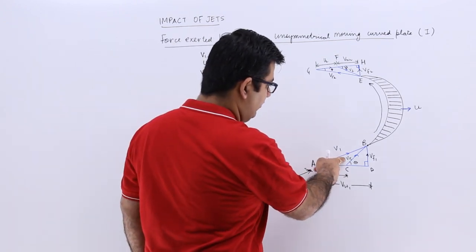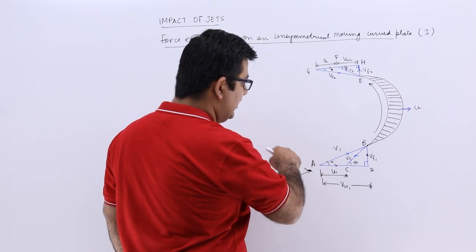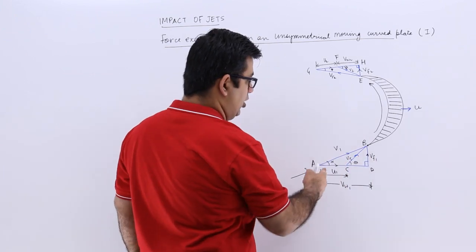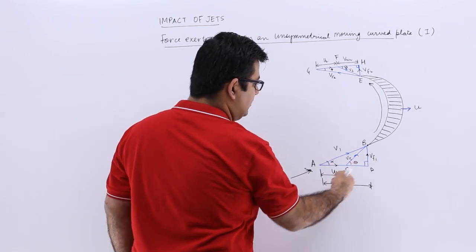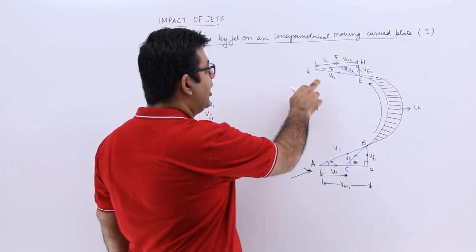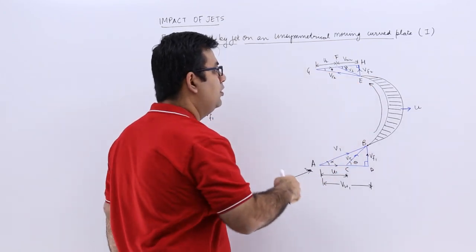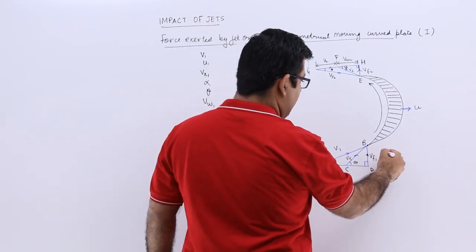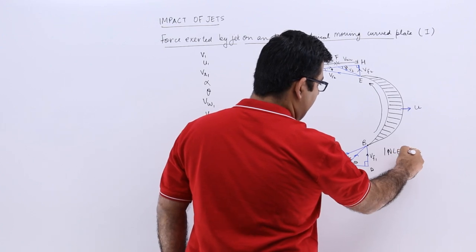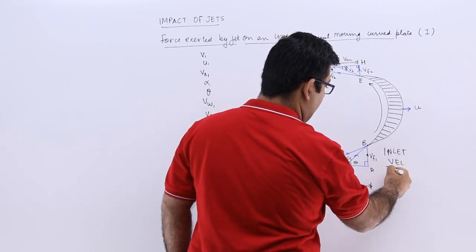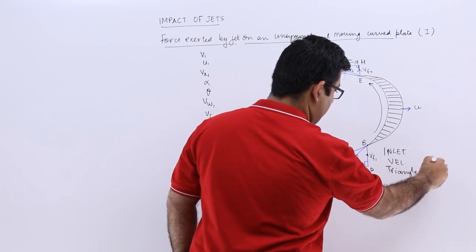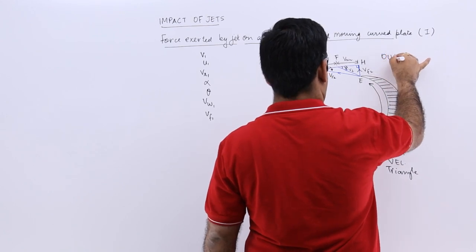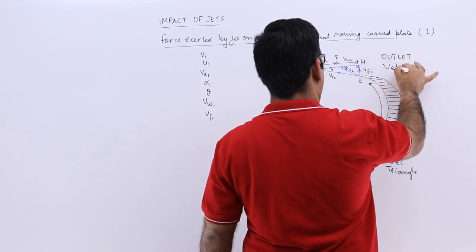V1, Vr1, Vf1, Vw1, and U1 are terms linked to triangle ABD or the entire ABDC triangle. Then you have Vr2, V2, Vf2, U2, and Vw2 which are linked to the upper triangle. The lower triangle is called the inlet velocity triangle (IVT), and the upper triangle is called the outlet velocity triangle (OVT).